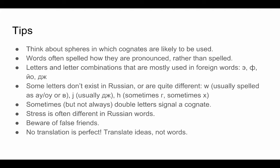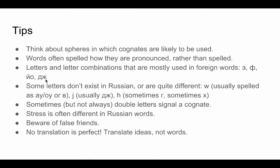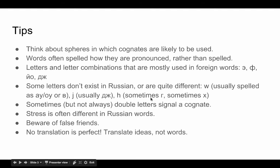Also, the combination YO is for a Y sound, for example. And there is no J sound in Russian — the way they make it is a combination of D and Z. Some letters don't exist in Russian or are quite different. W is usually spelled as O or V. J is usually D-Z. And H is sometimes G and sometimes H.